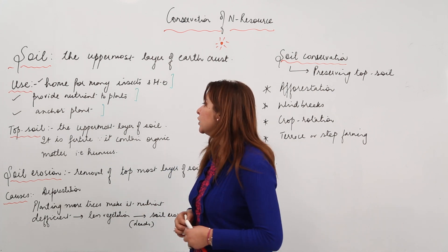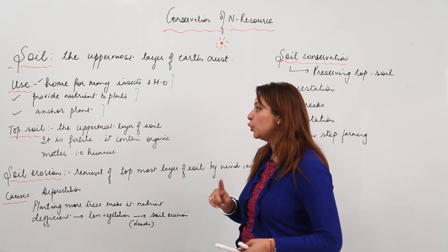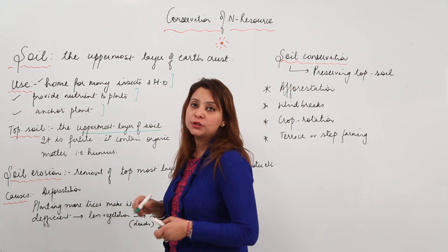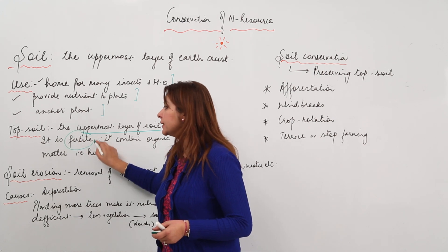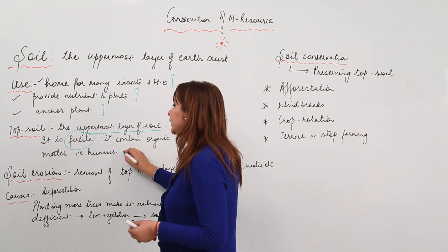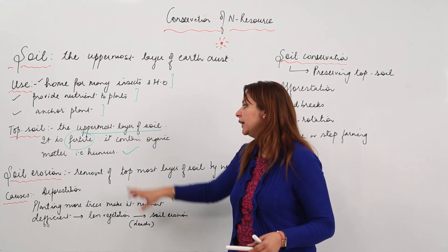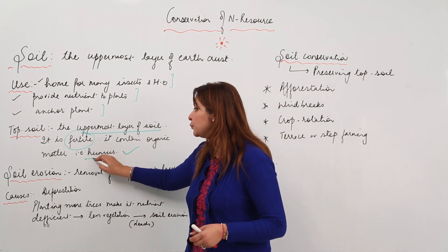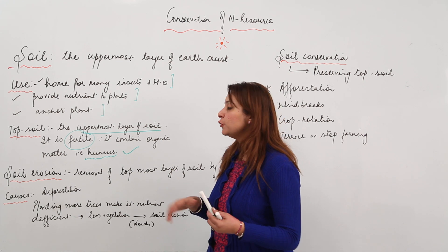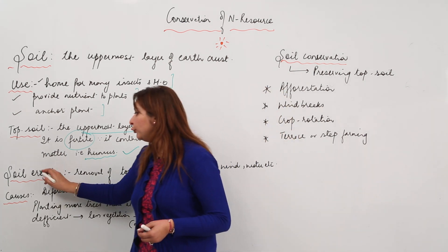Soil has different regions. Topsoil is the most important layer — it is the uppermost layer of the soil and is called the fertile layer because it contains organic matter and is rich in nutrients. It contains organic matter called humus, which makes soil efficient for the growth of plants.